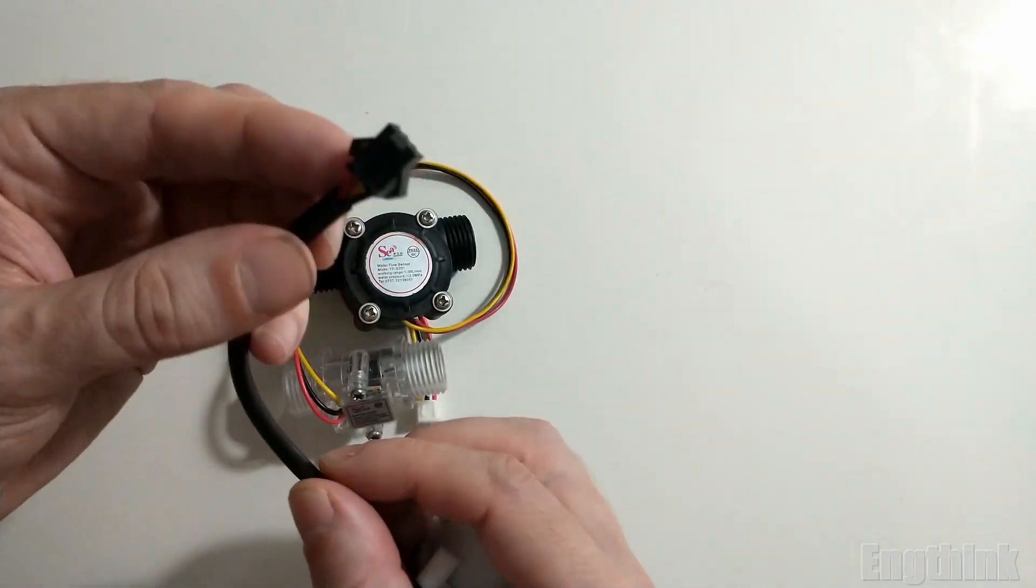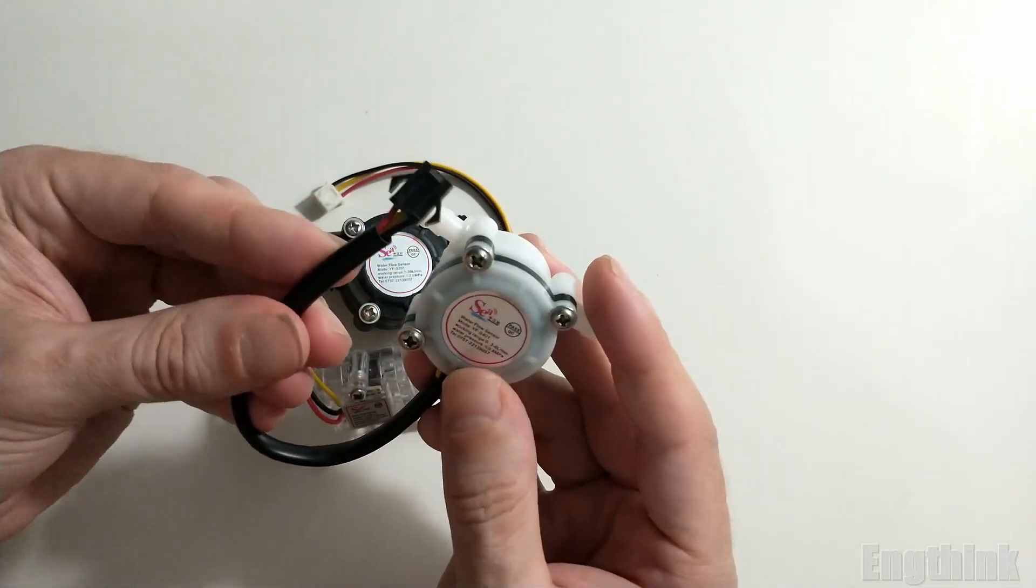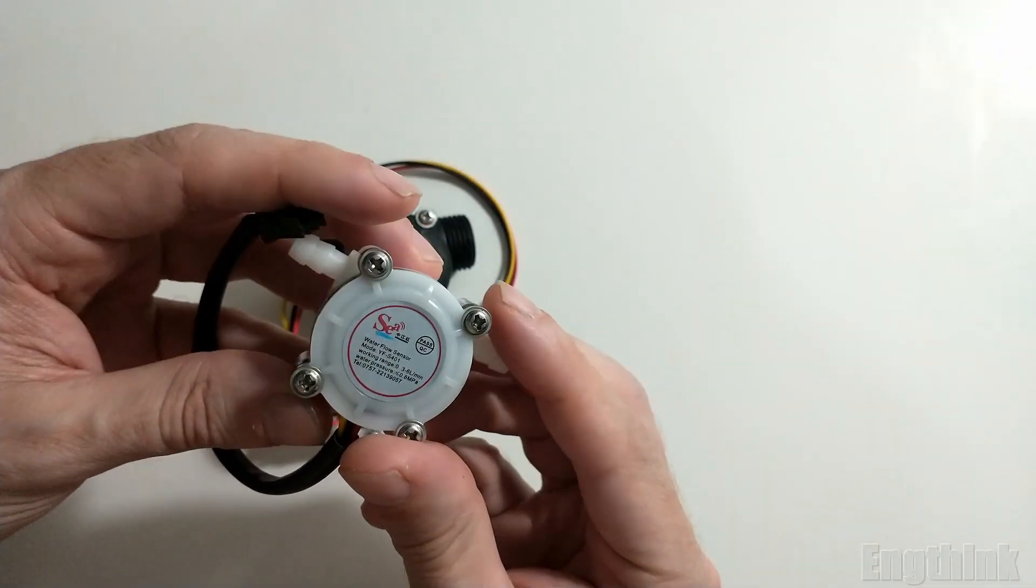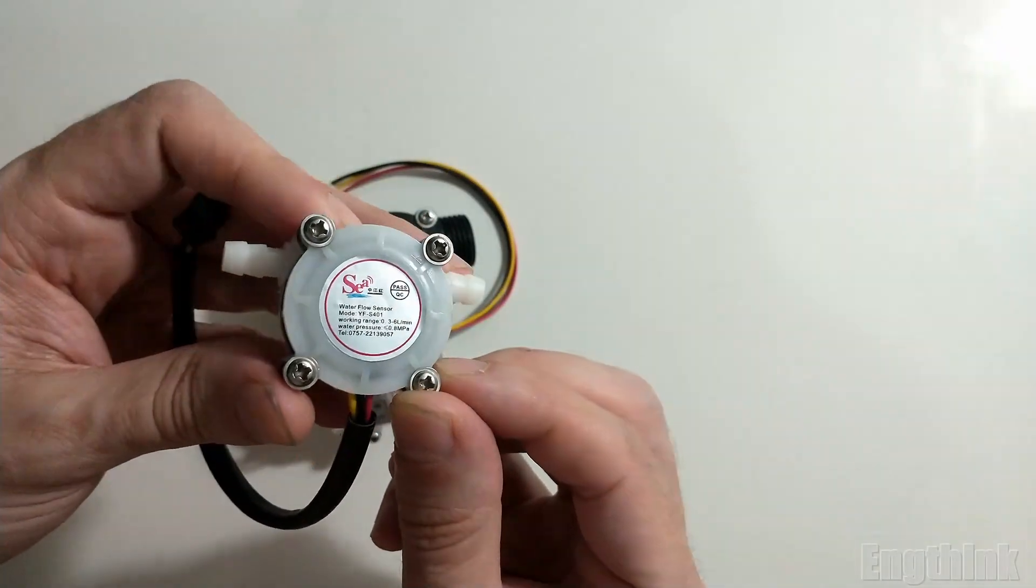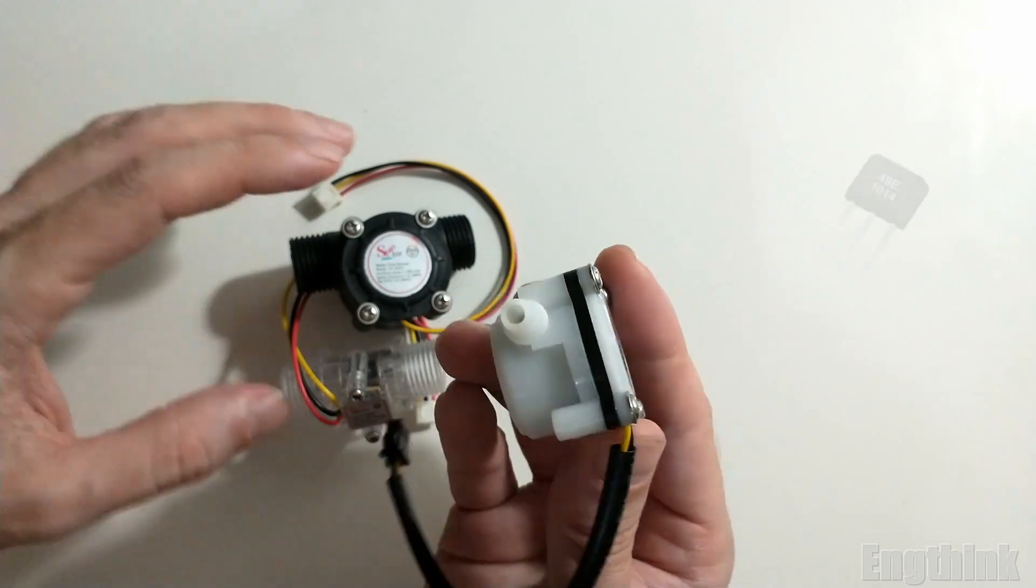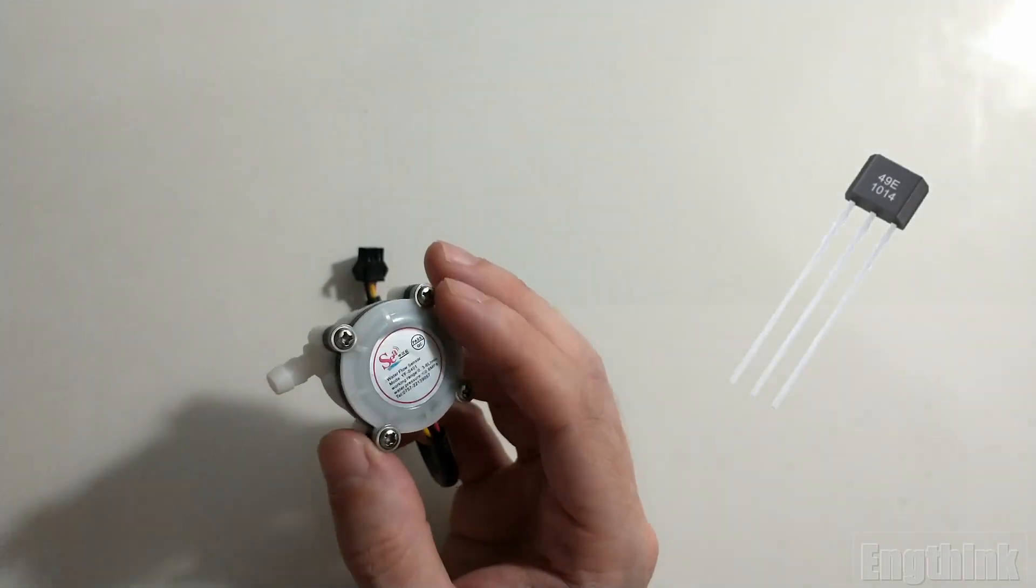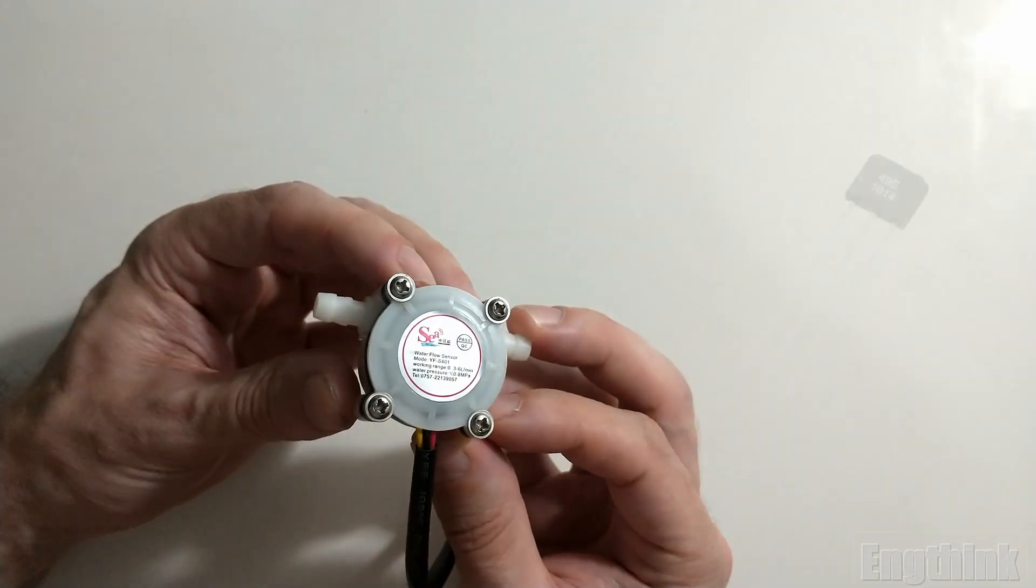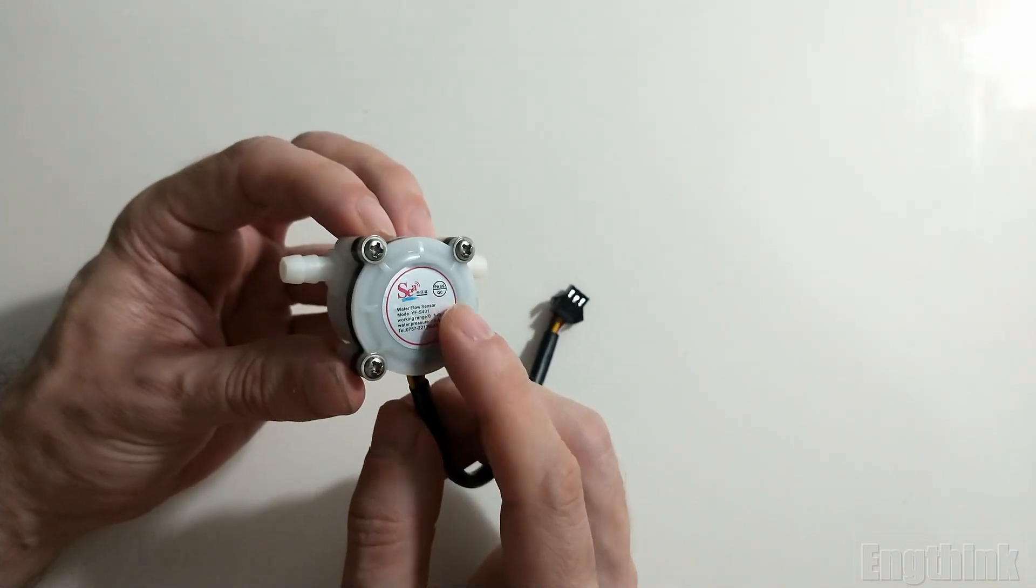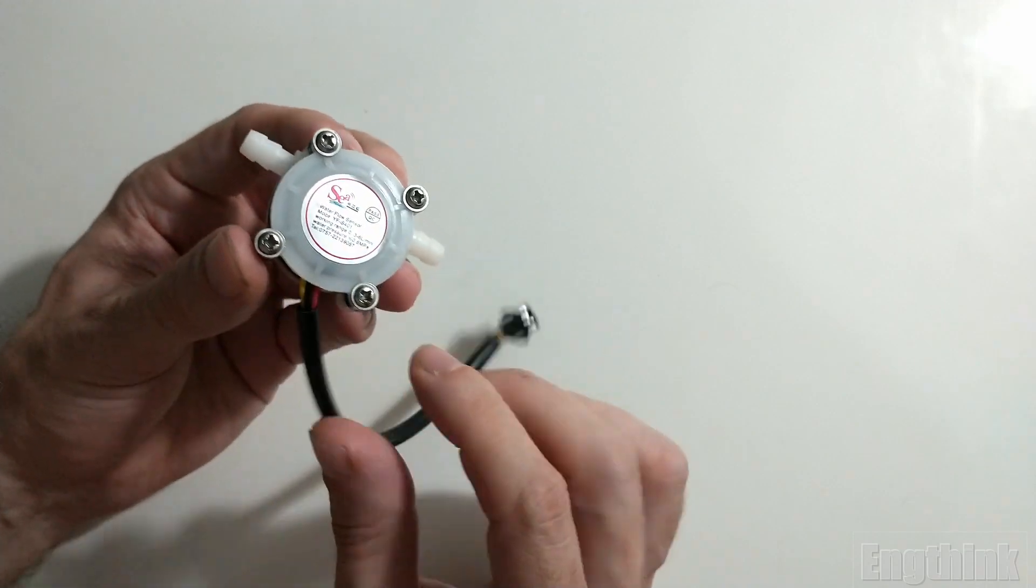Let's start talking about the small flow sensor. Inside this flow sensor there is a small electronic component that is a Hall effect sensor. Now let's move to a practical approach to test it.